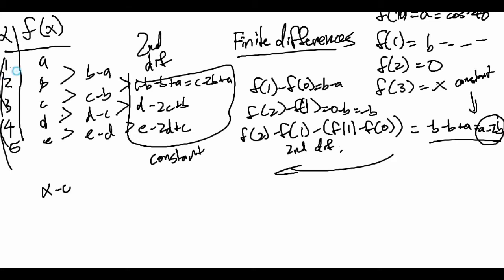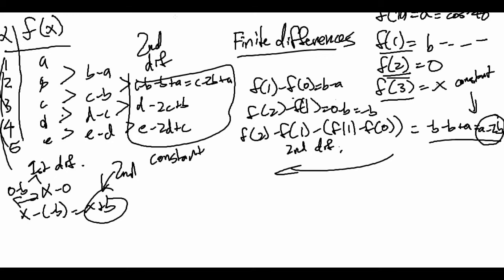So x minus 0 and 0 minus b are the first differences. And the second difference would be x minus negative b equals x plus b. This is the second difference. Remember, we just subtracted f of 3 from f of 2 and then f of 2 from f of 1 to get these two numbers. And then we subtracted those to get this.